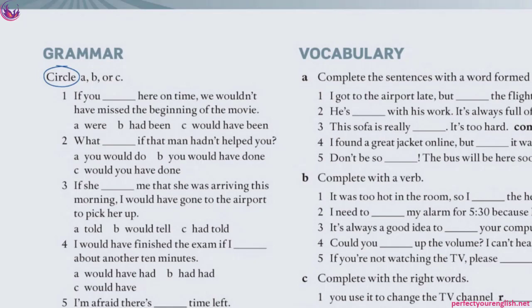Number 2 is also conditional type 3 — about the past. 'What would you have done if that man had not helped you?' We're imagining: he did help you, but if he hadn't, what would you have done? In the if-clause we have past perfect; in the result clause 'would have' plus the third form. C is correct.